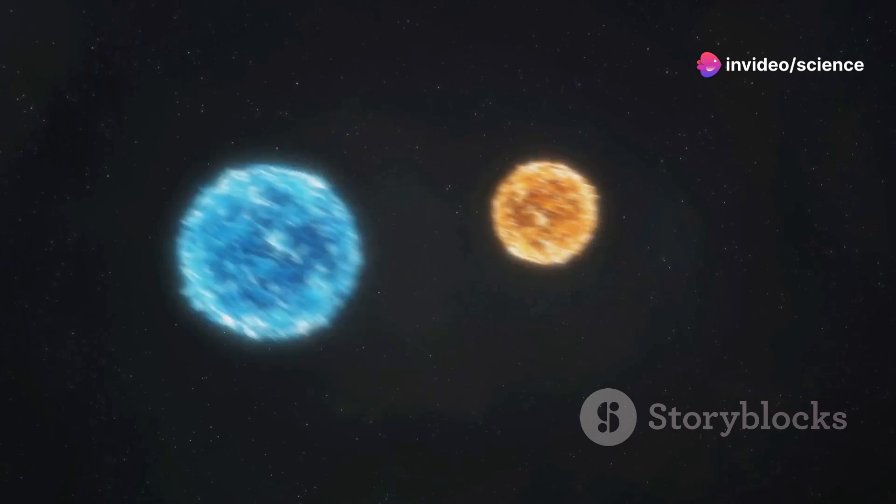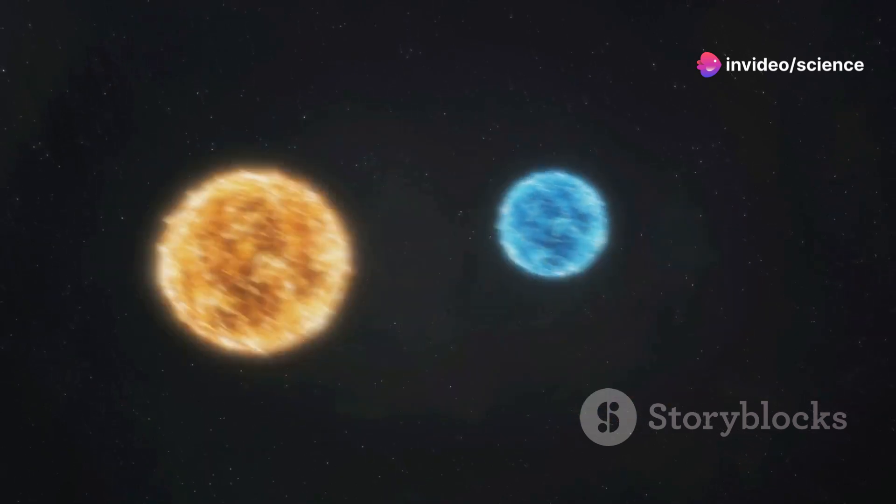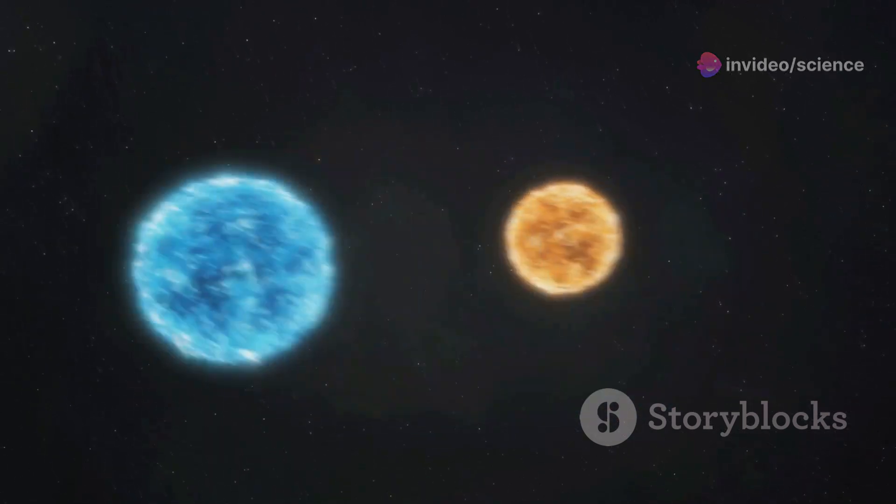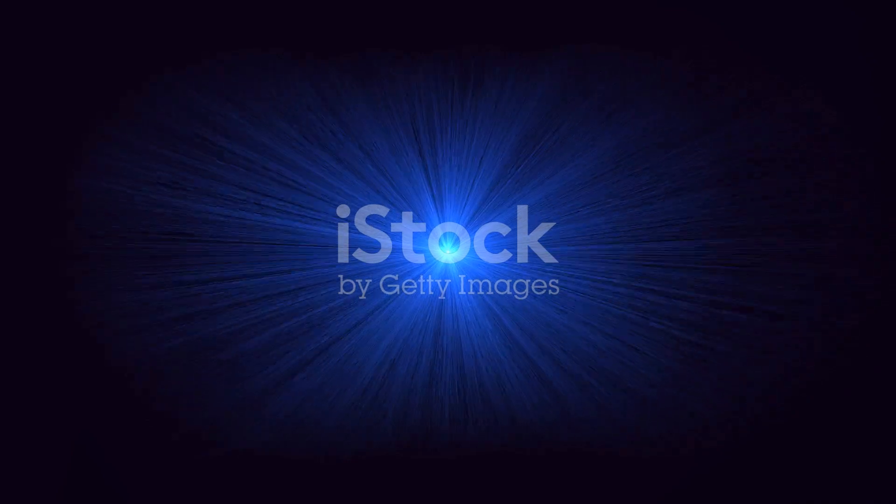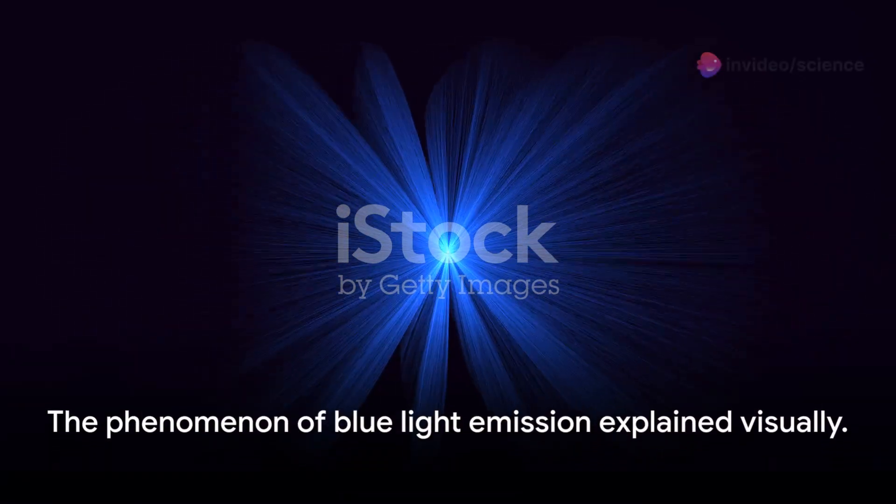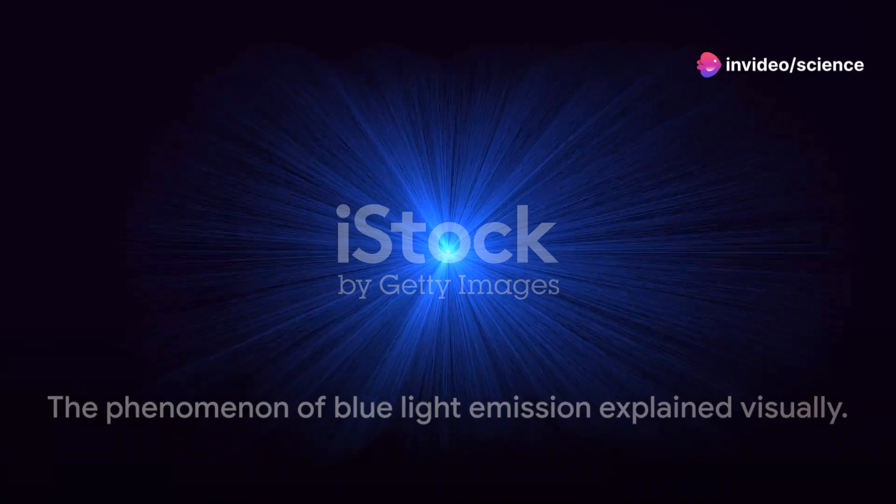First off, neutron stars are incredibly hot, way hotter than anything you'd find here on Earth. This intense heat causes them to emit a lot of light in the blue part of the spectrum. It's similar to how a really hot flame will often appear blue.